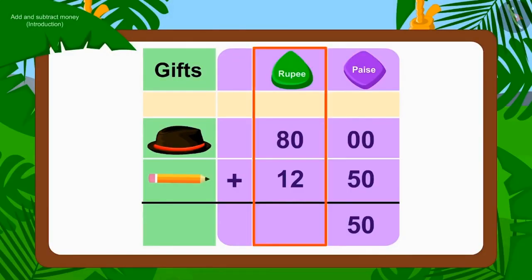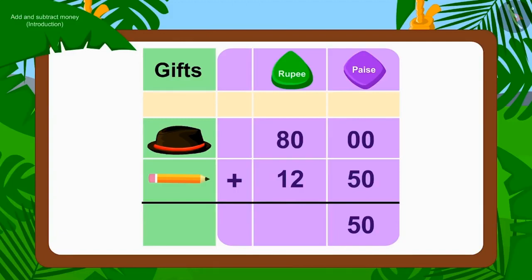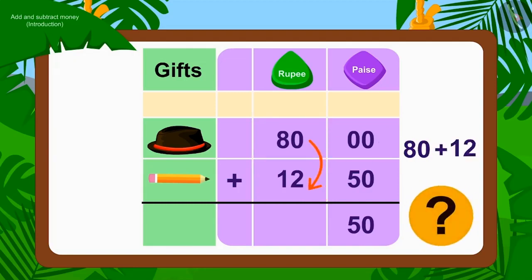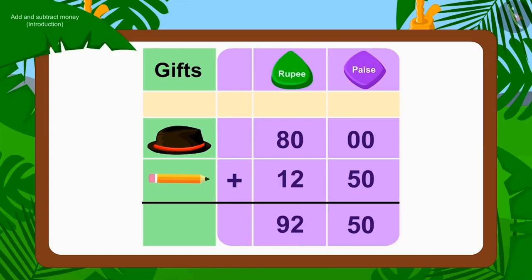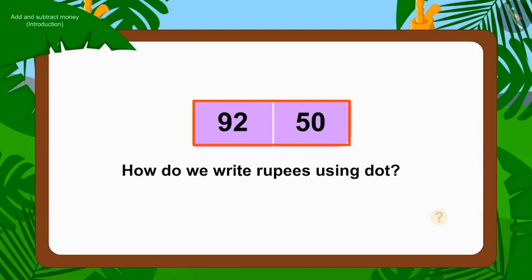Now we will add the rupee numbers. The cap costs Rs. 80 and the price of the pencil is Rs. 12. 80 added to 12 is Rs. 92. In this way, the total value of both the items became Rs. 92 and 50 paise.